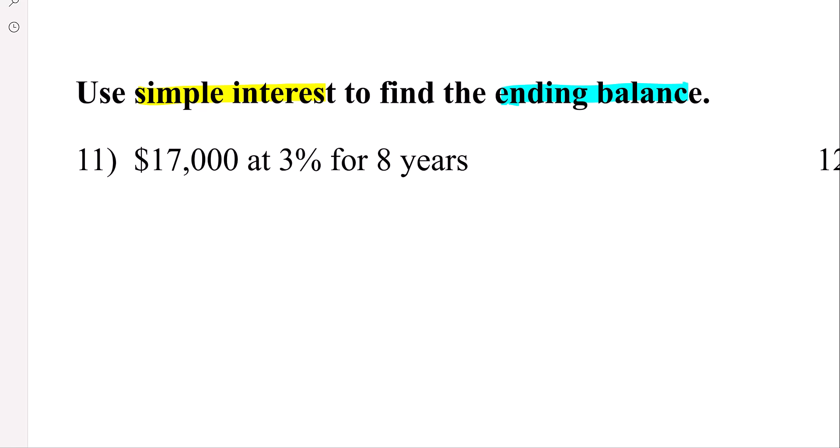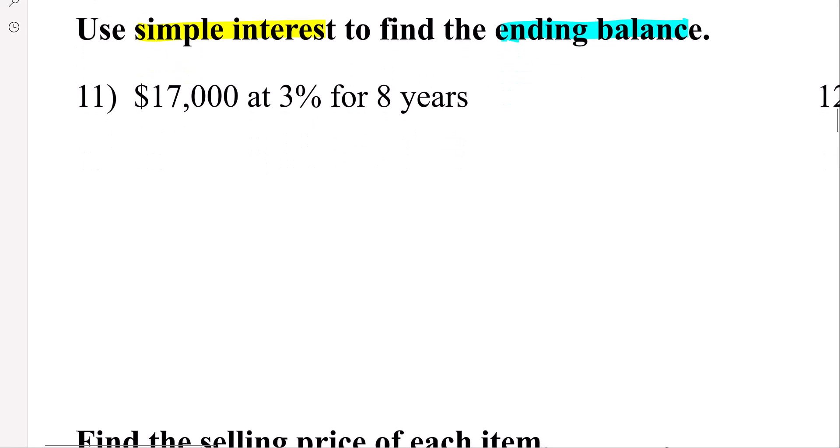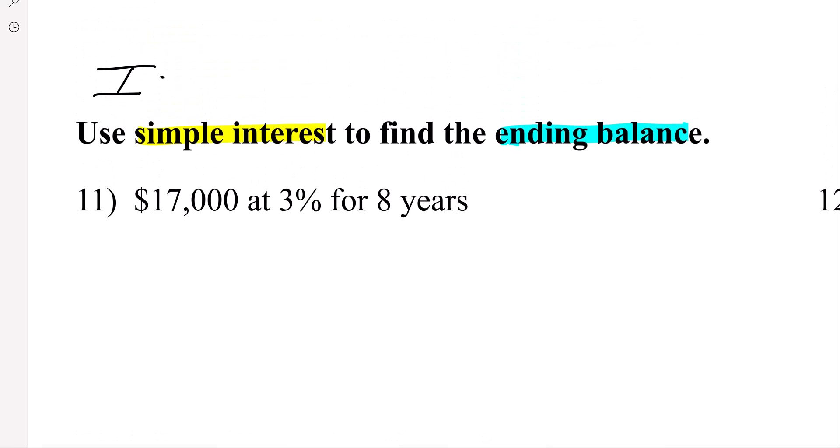All right, so in order to find interest, there's this formula. Interest equals - so principal is the amount you are investing or saving, times the rate, that's the interest rate that you change to a decimal, times the number of years you invest.